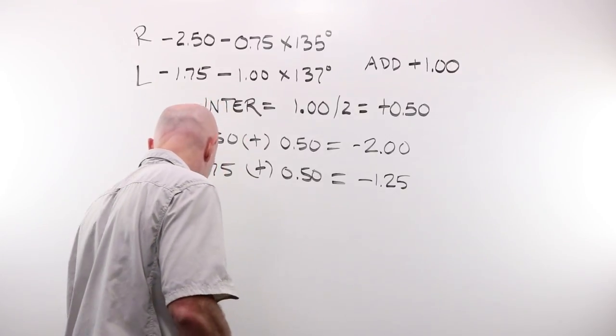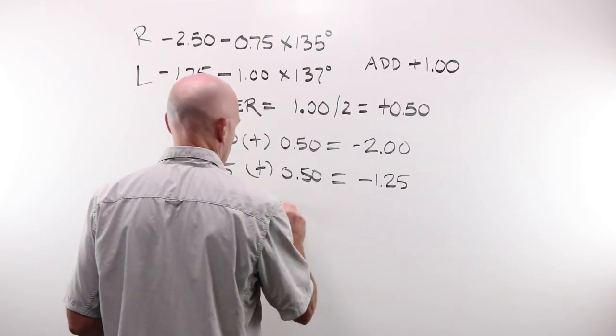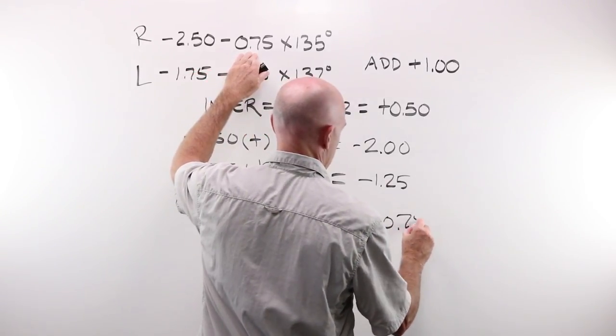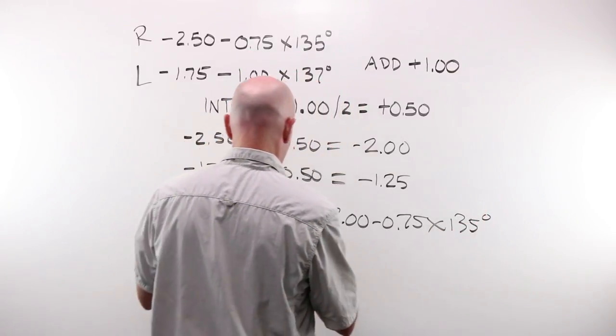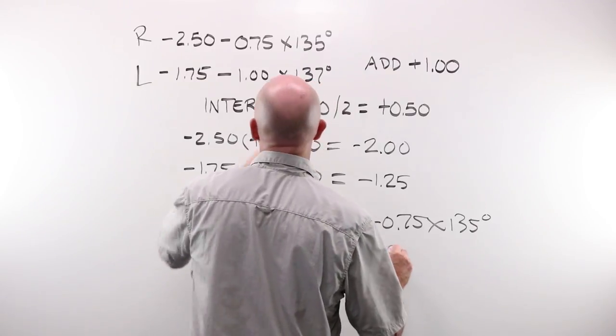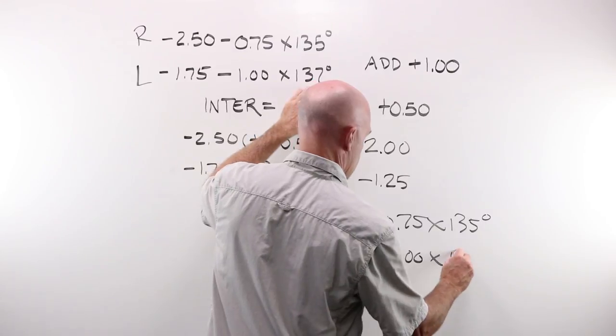What am I going to make this person for an intermediate pair of glasses? Right: -2.00 -0.75 at 135. Left: -1.25 -1.00 at 137.